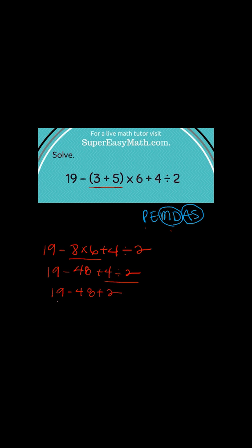Now if I just take 19 and subtract 48 and then add 2, I'm left with 27.